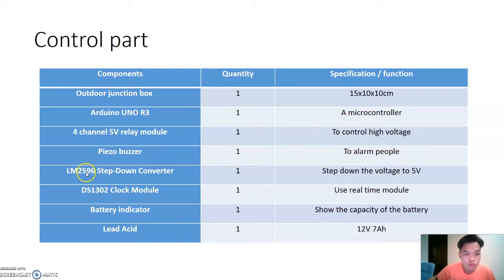Next is the LM2596 step down converter. This converter is used to step down the voltage to 5V. And next is the DS1302 clock module. This clock module is used as real time module, and it can calculate the time that we spread the disinfectant. Next is the battery indicator. This battery indicator shows the capacity of the battery, so we know when to charge the robot. Lead acid battery is used in this project because it is rechargeable, so we do not have to replace the battery frequently.